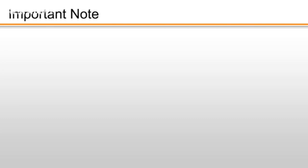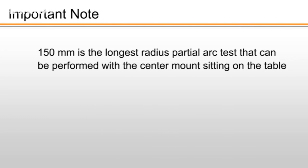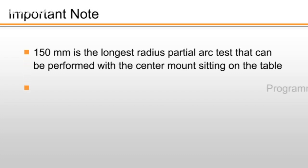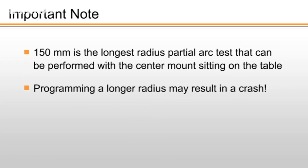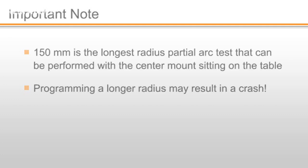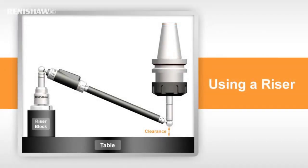Please note that 150mm is the longest radius partial arc test you can perform with the centre mount sitting on the table. Programming a longer radius may result in a crash and cause severe damage to your machine. If you wish to perform longer partial arc tests, use riser blocks or other fixturing to raise the centre mount above the table.